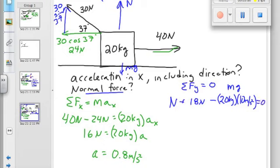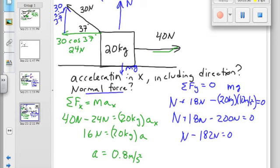You're still on the same thing? Normal plus 18 newtons minus 200 newtons equals zero. Normal force minus 182 newtons equals zero. Add it to both sides. Normal force is 182.